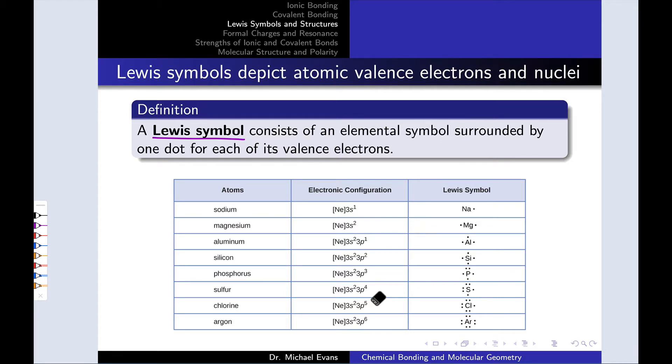A Lewis symbol quite simply consists of an elemental symbol which represents the nucleus and the core electrons, surrounded by dots which represent the valence electrons. For example, a hypothetical Lewis symbol might have an element symbol at the center, let's call it x, with dots around it like this.